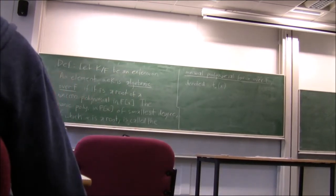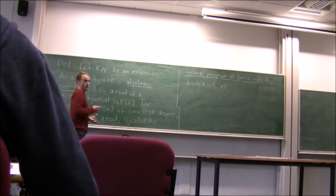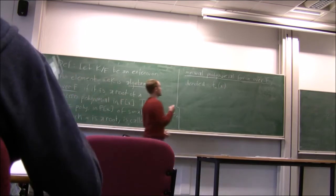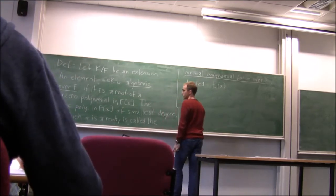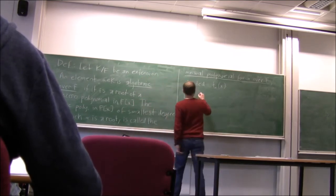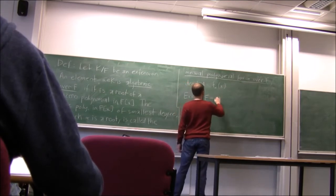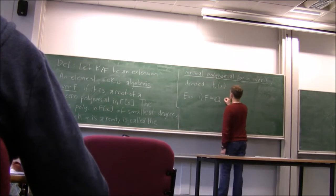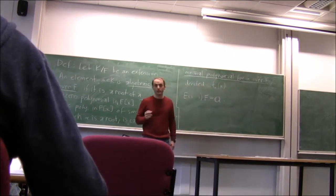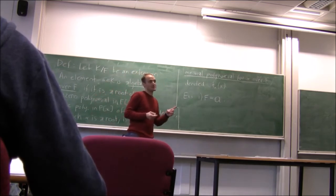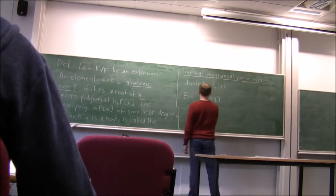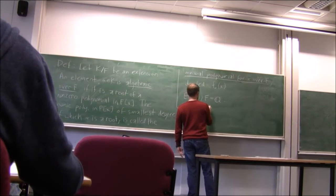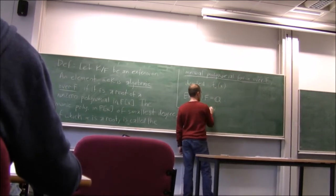Can I do an example? You're familiar with algebraic numbers — presumably you've come across these before; they're roots of polynomials. Let me give you examples of algebraic and non-algebraic numbers over a field. My first example: I'll take my field to be the field of rationals Q. What would be some numbers which are algebraic over Q? Anything in Q is automatically algebraic over Q — so a rational number gamma is algebraic over Q.